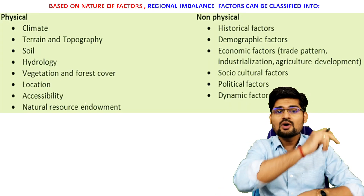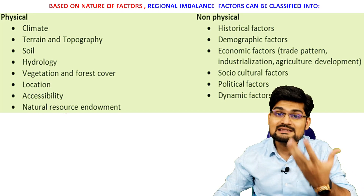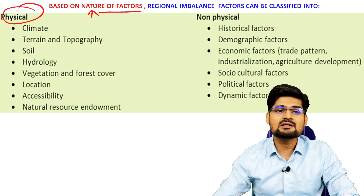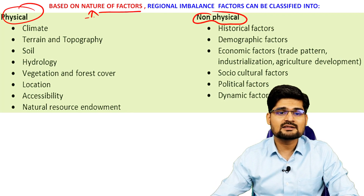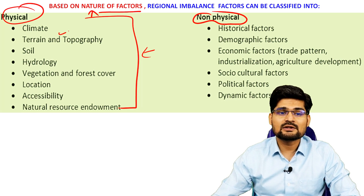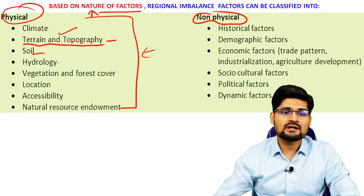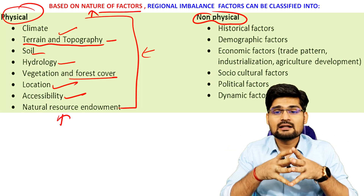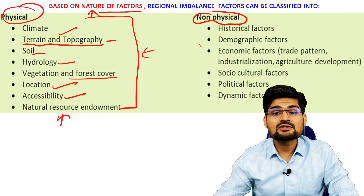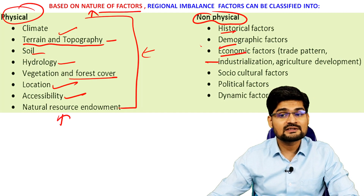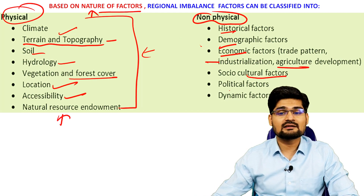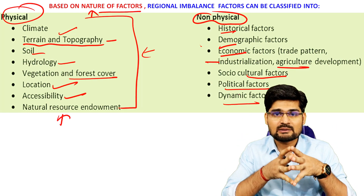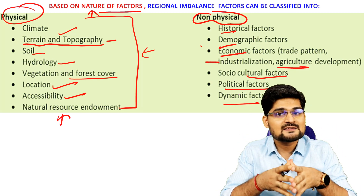When classifying the factors that cause these imbalances, the first way is by their nature: physical or non-physical. Physical factors include geographical factors of physical geography — climatological, geomorphological, terrain and topography, soil, hydrology, vegetation and forest, location, accessibility, and natural resource endowment. Non-physical factors include historical factors, demographic factors, economic factors, levels of industrialization, agrarian development, socio-cultural factors, and political and dynamic factors.